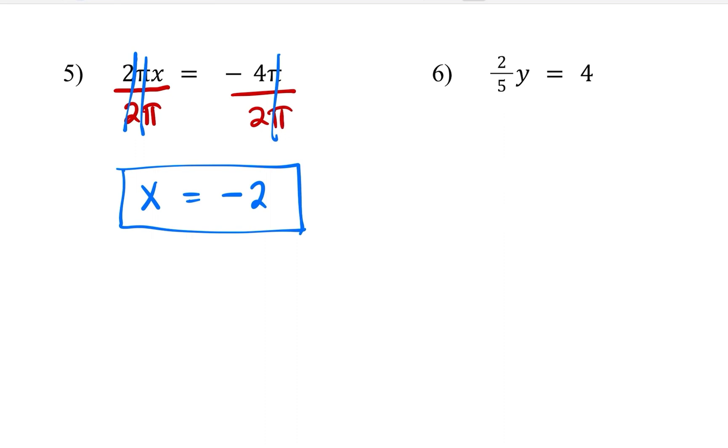For number 6, we have a fraction, and we would like to get rid of the fraction. So in order to do that, we're going to do the inverse of 2 over 5. And inverse of 2 over 5 is 5 over 2. That's the inverse. Why do we need to do this? Because we want to isolate the variable y by itself. So we're going to multiply that same exact fraction on the right-hand side as well. So 5 divided by 5 is 1, 2 divided by 2 is 1, which is going to leave us with y.